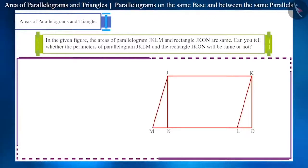In the given figure, parallelogram JKLM and rectangle JKON have a common side, side JK. We can say that their base is also same, which is side JK. We know that a rectangle is also a parallelogram. So we can say that these two parallelograms lie between the same parallel lines JK and MO.